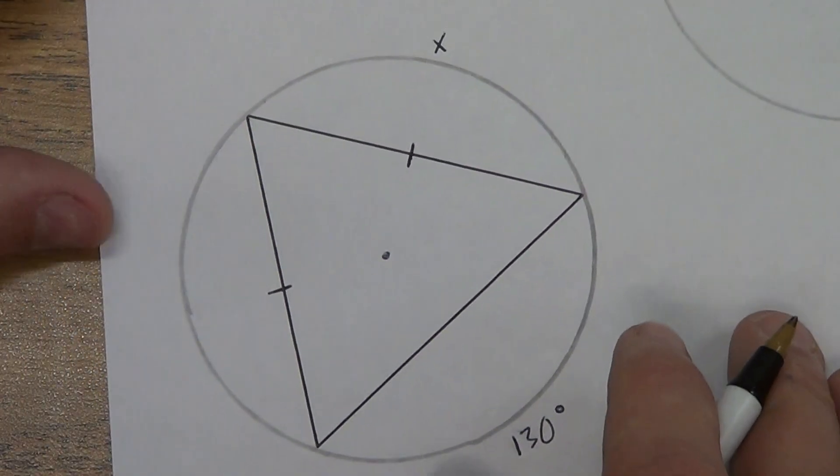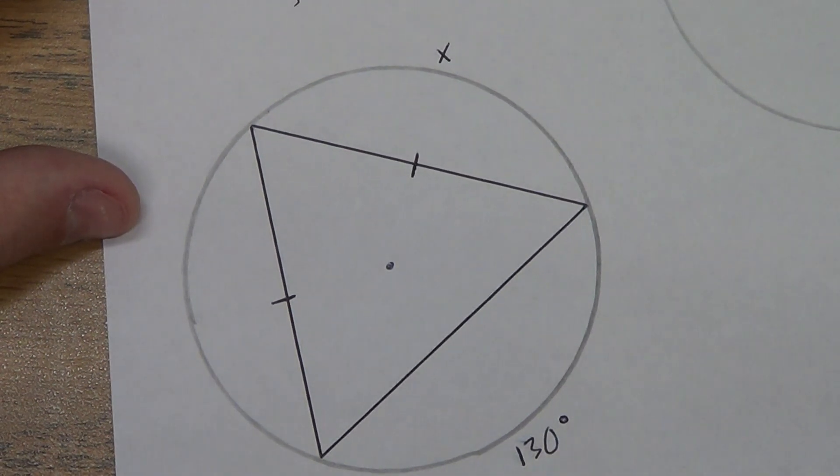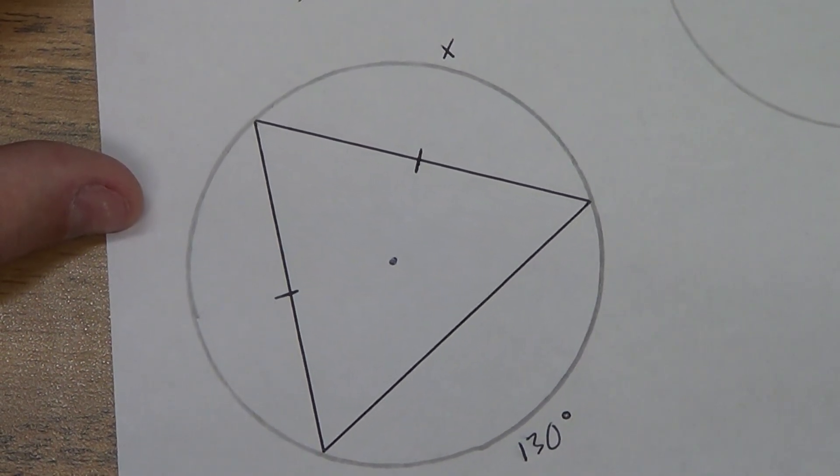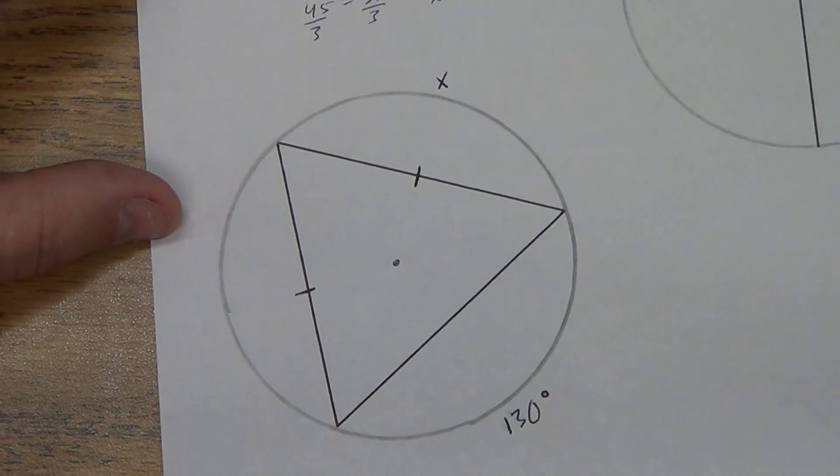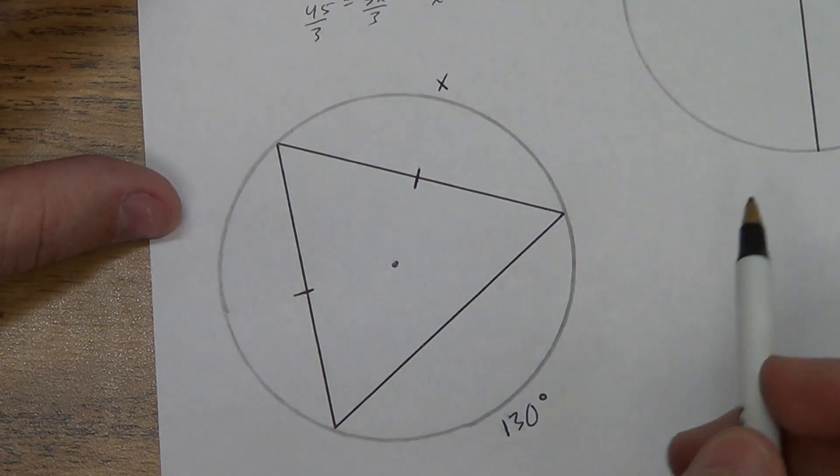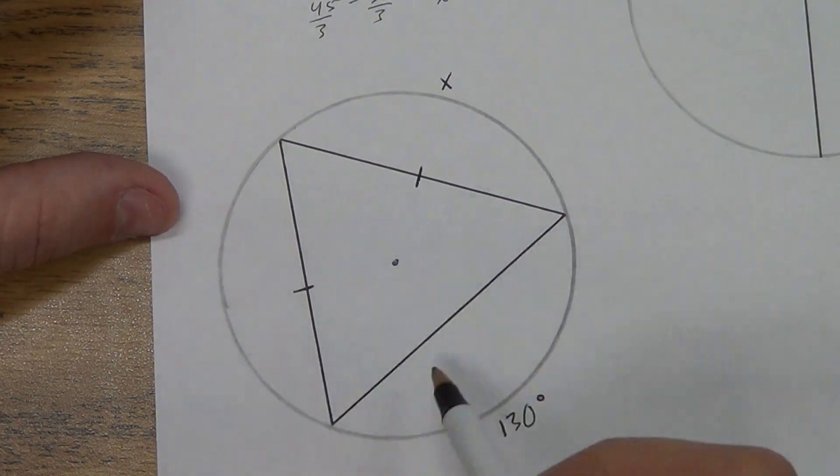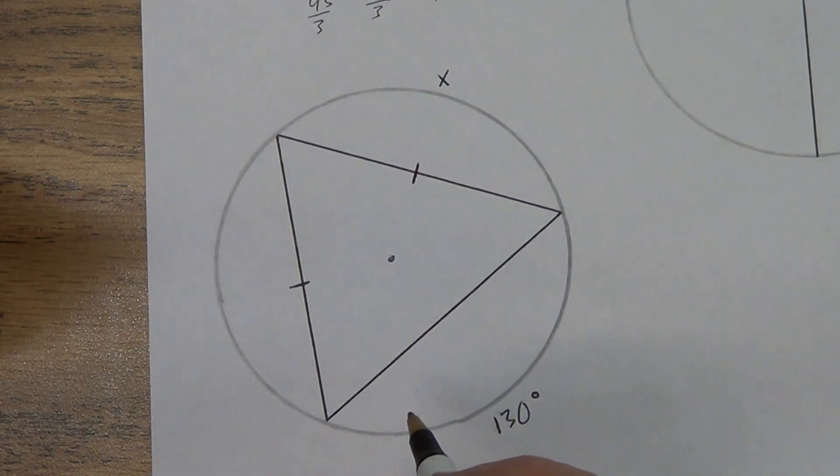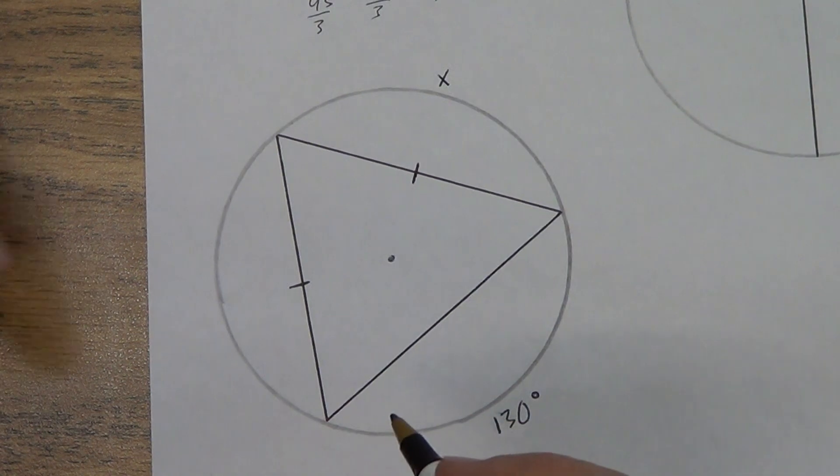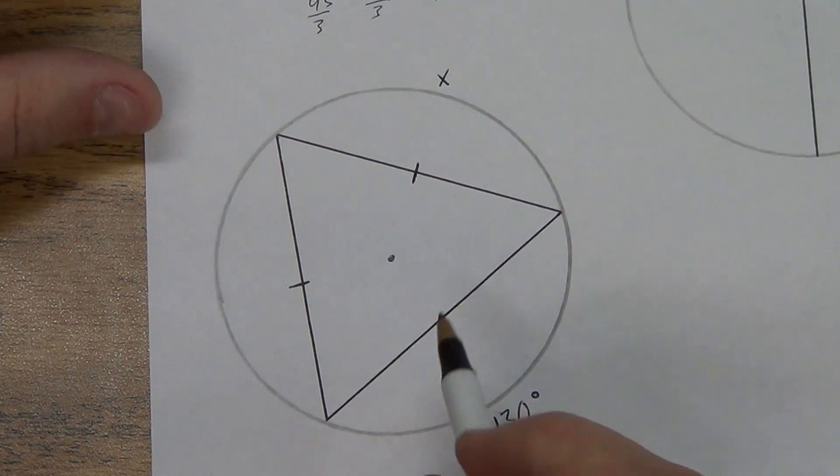Alright, third example. So we got this one here. We've got a triangle. I've got two sides that are congruent. So let's think about that. What theorem might help me with this one? Remember, draw this out. Copy it down. Pause the video whenever you need to, so that I don't get too far ahead of you.